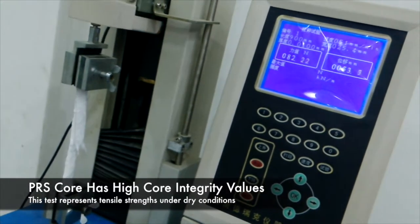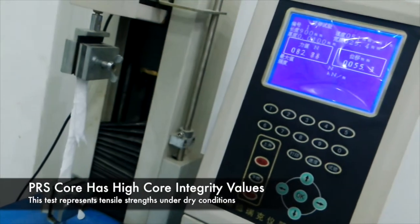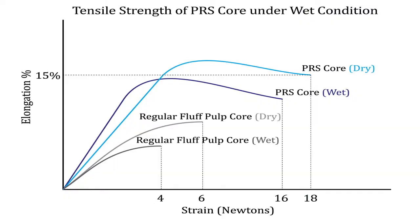Here you can see tensile strengths on Galaxy's cores. This graph shows the vastly improved core integrity under wet conditions compared to regular fluff pulp constructed cores.